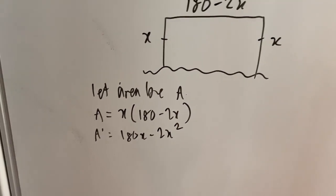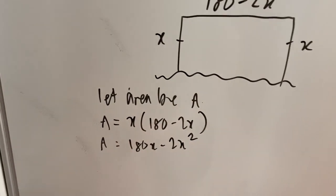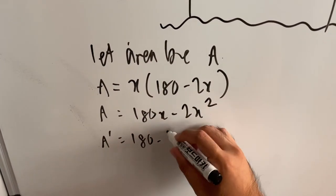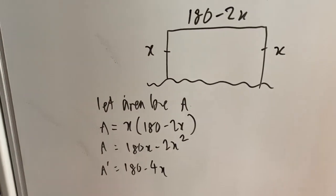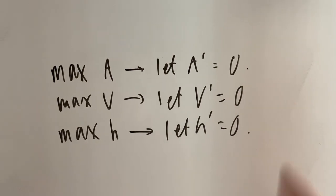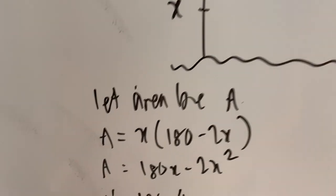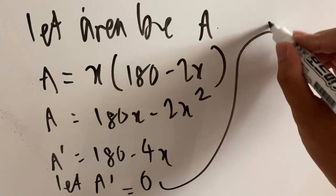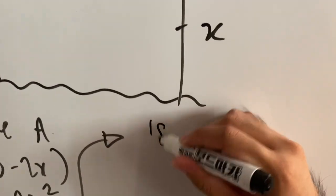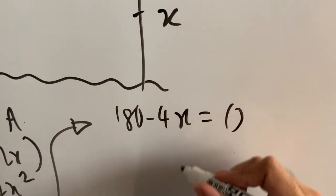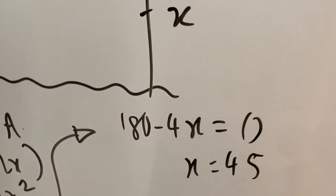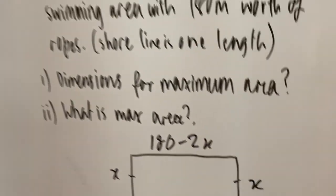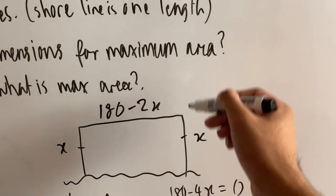And then now I need to think to myself, that wasn't A dash, that was just A. Now I want to find A dash. So that's going to be 180 minus 4x. And remember what I said before with notes, if you want to find a maximum area, you let A dash equal to zero. So I need to let A dash equal to zero. And I'm just going to do the working out up here. That's going to be 180 minus 4x equals to zero. So x is just going to equal to 45. And 45, remember your units, it's going to be 45 meters.